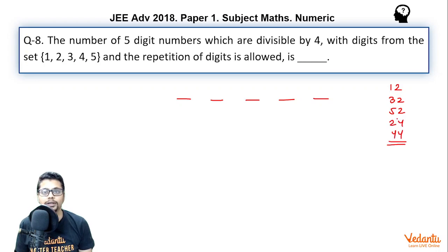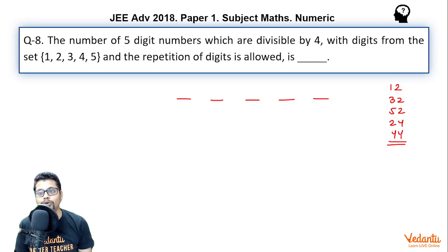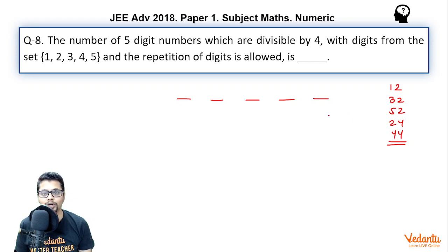How did I find these? For a number to be divisible by 4, it must also be divisible by 2, so the last digit must be even — either 2 or 4. From there, the valid last two digits are 12, 32, 52, 24, and 44.